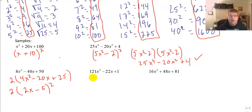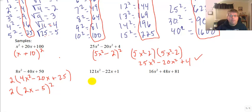Sample problem 4: 121 and 1 are both perfect squares. The square root of 121 is 11 and the square root of 1 is 1. 11 times 1 times 2 is 22, matching the middle term. So this factors to the quantity 11x minus 1 squared.